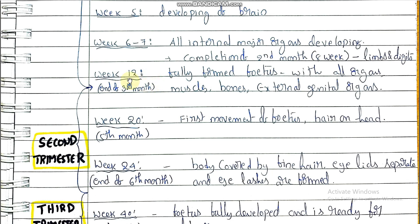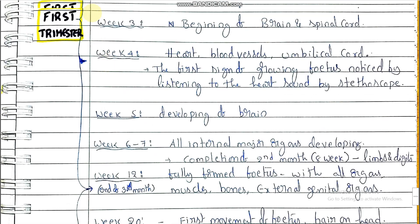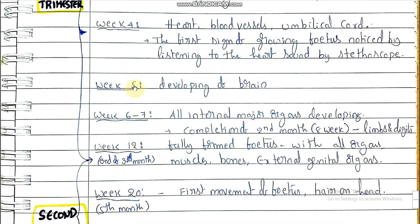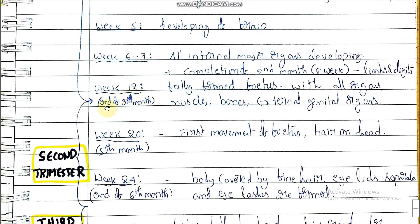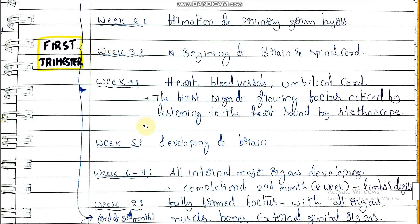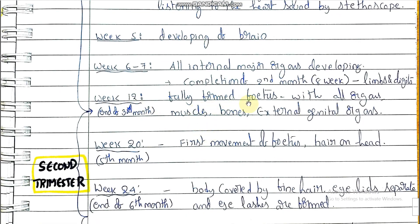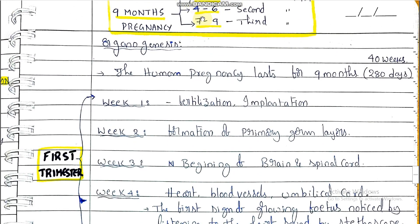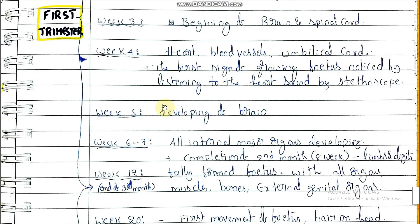Week 12 marks the end of the first trimester — first through third months — during which a completely formed fetus with all organs, muscles, bones, and external genital or sex organs has developed. The second trimester covers months four to six.